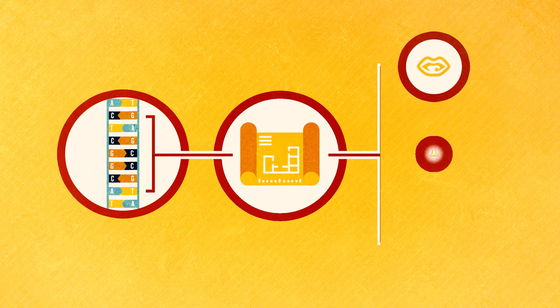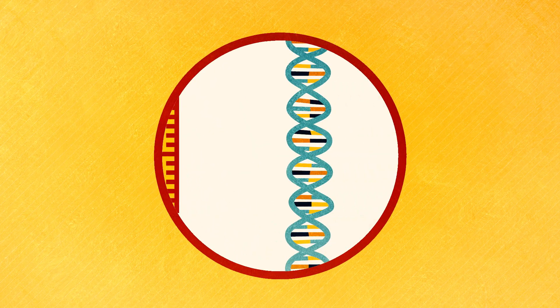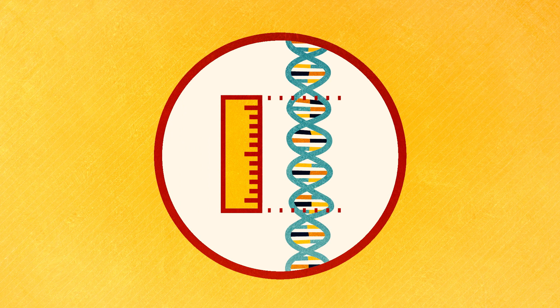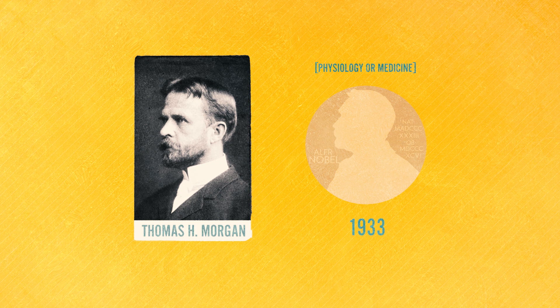Genes supply the blueprints for proteins, which are in turn responsible for traits such as eye or hair color. It was Thomas Hunt Morgan who discovered the genes lie in sequence along each chromosome, at specific distances from each other. This discovery earned him the Nobel Prize in 1933.